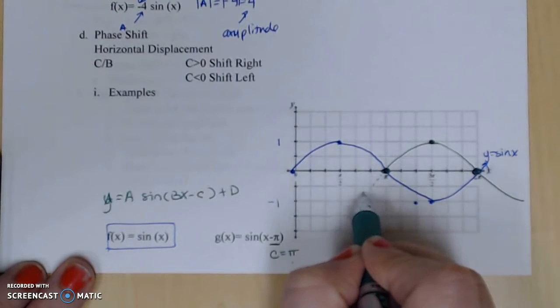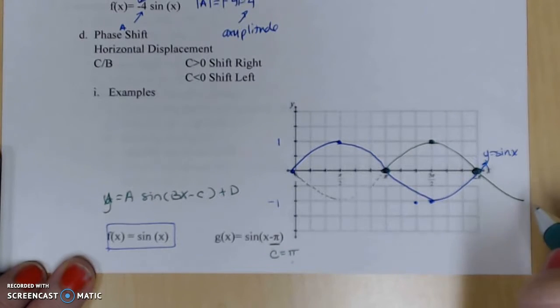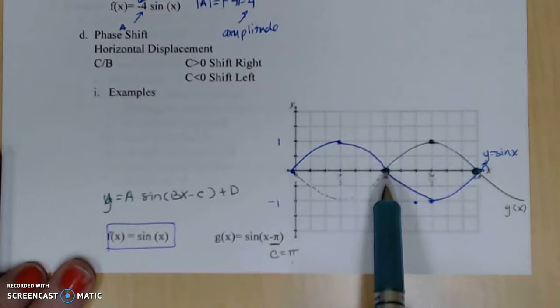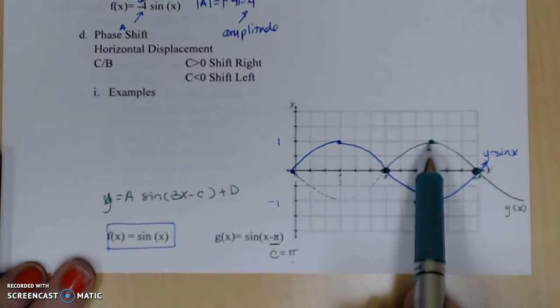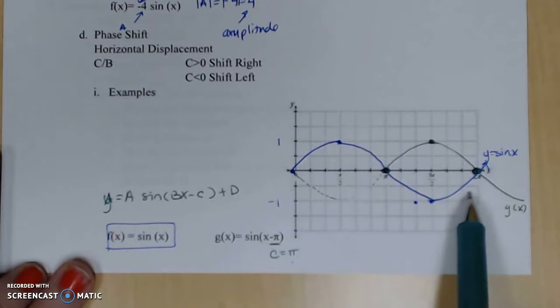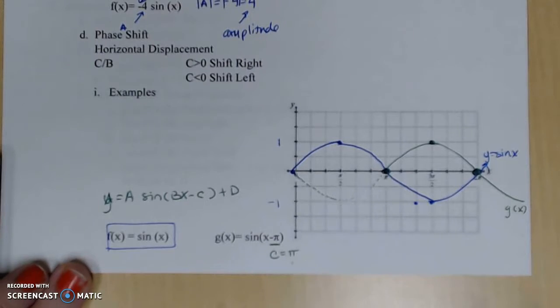And if you like, I could backtrack it – half a period here – and you can see that this is my G function. So it still has a way of going up one unit and coming down all the way to negative 1, but it's taken this blue graph here and shifted it over pi units to create this new graph.